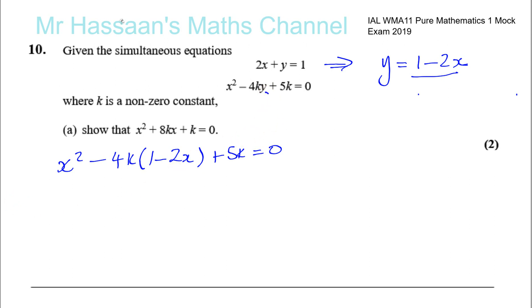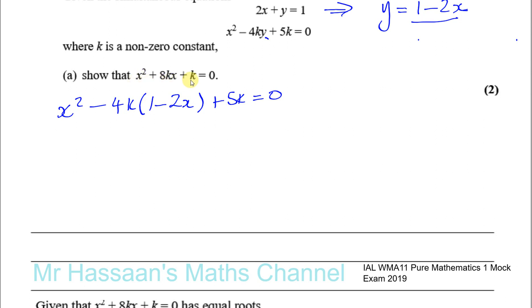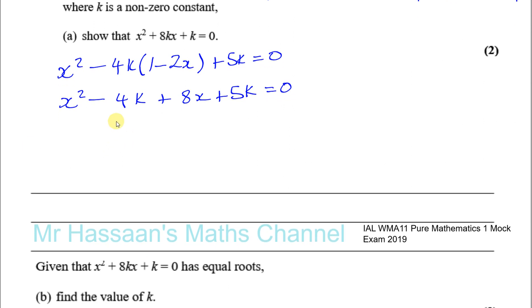Now I can expand and hopefully simplify, and it should come out to what we have to show. So: x squared minus 4k times 1 is minus 4k, then minus 4k times minus 2x is plus 8kx — be careful not to confuse your k's and your x's, sometimes written in a rush they look the same — and you've got plus 5k. So we have x squared plus 8kx.